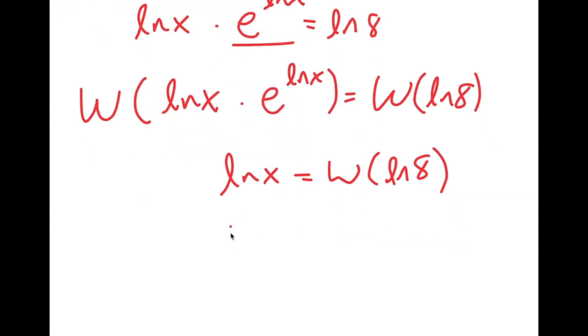And then now I'm going to take e to the power of both sides. So I get e to the power of ln x is equal to e to the power of W of ln 8. And e and ln cancel out.